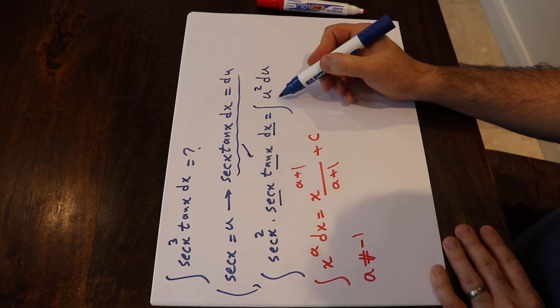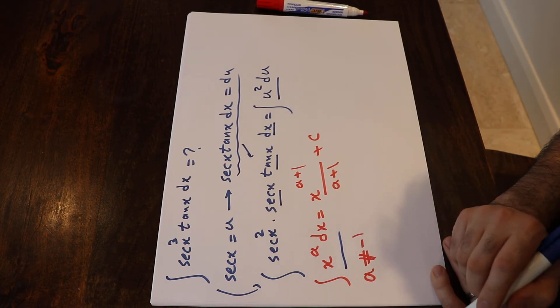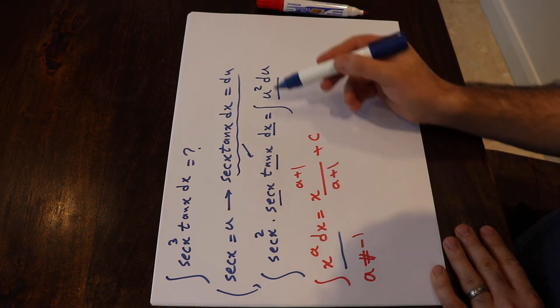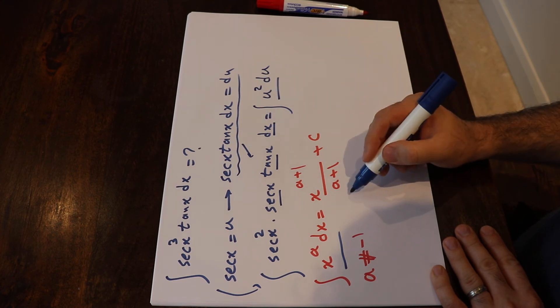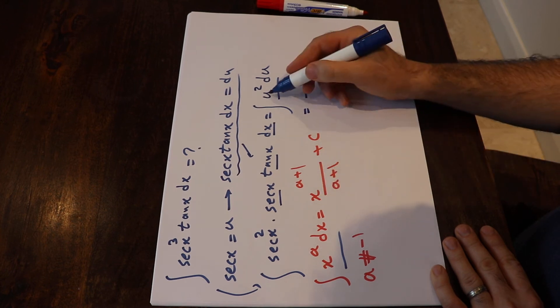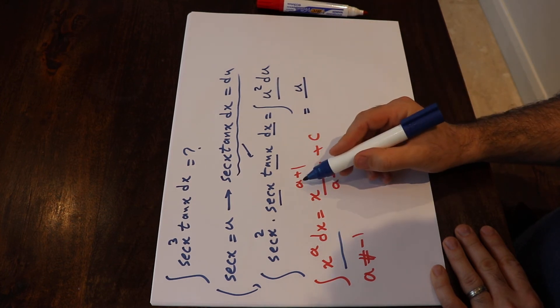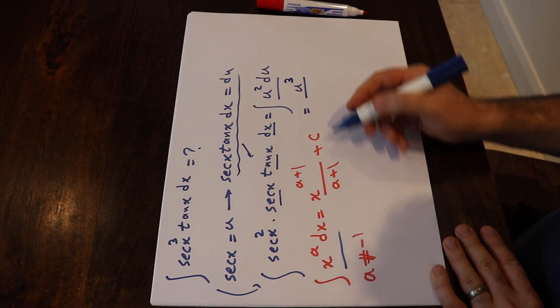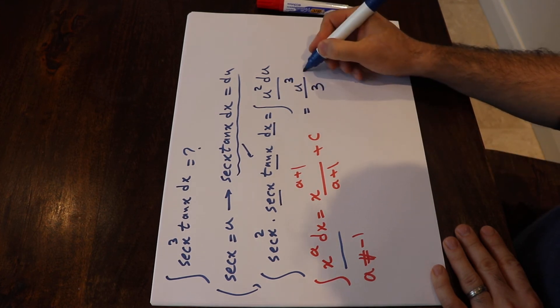Okay, so if you compare this integral with this integral, you see they have the same format, and in this particular case a is equal to 2. That means you can use this formula to solve your integral, which will be equal to x, that is u in this case, with the power of a+1, that is 2+1 is 3, divided by a+1, that is 2+1 is 3, plus c.